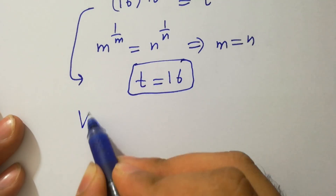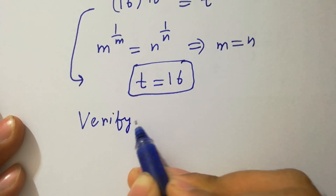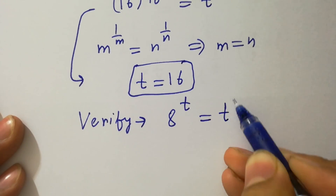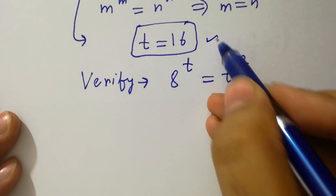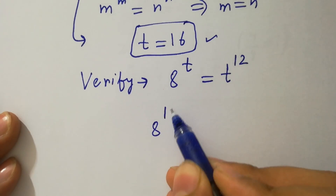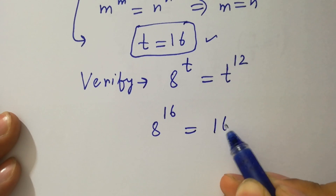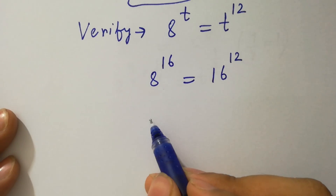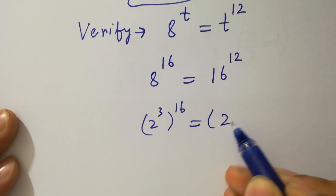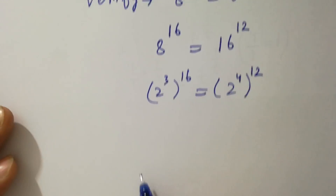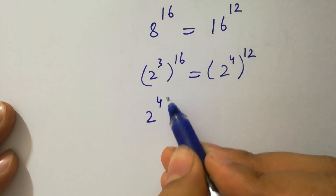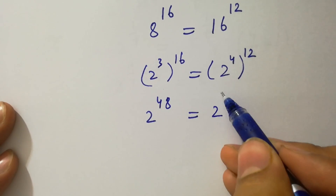Now I am going to verify. 8 to the power t equals t to the power 12. Put the value of t which is 16. We have 8 to the power 16 equals 16 to the power 12. As 8 is 2 cubed and 16 is 2 to the power 4.